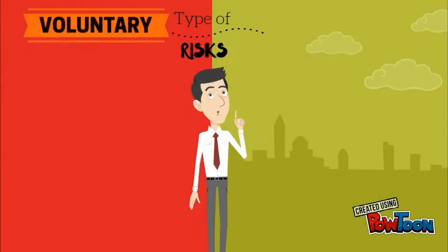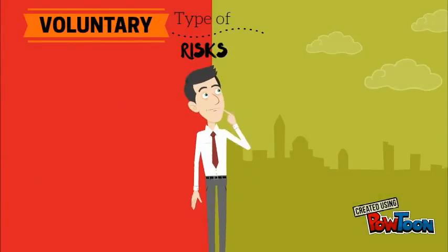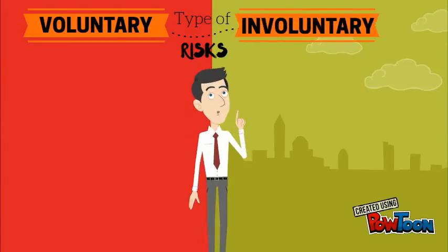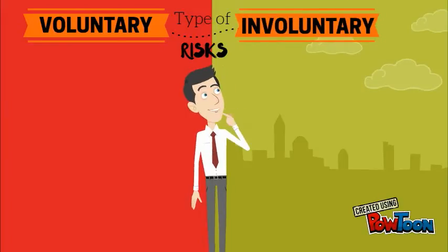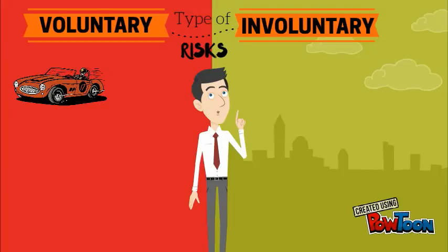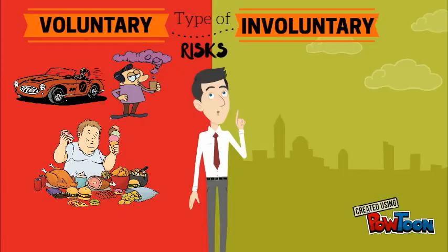Now, there are two types of risk: voluntary and involuntary. In voluntary risk, you are willingly putting yourself in danger. For example, you drive very fast on the highway, smoking, and overeating.